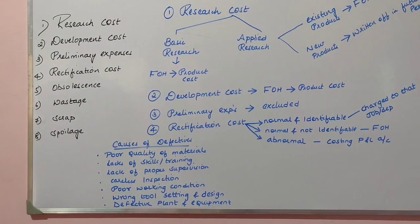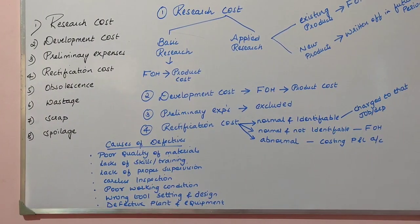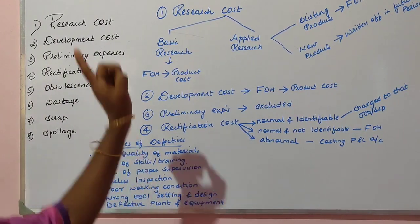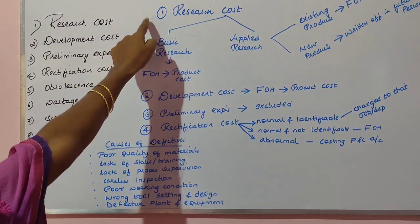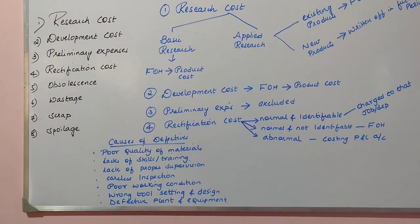The different special expenses in cost accounting are: research cost, development cost, preliminary expenses, rectification cost, obsolescence, wastage, scrap, and spoilage. Let's start with the first expense — research cost.